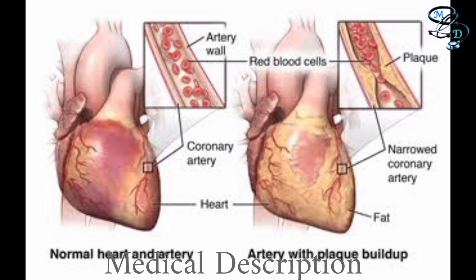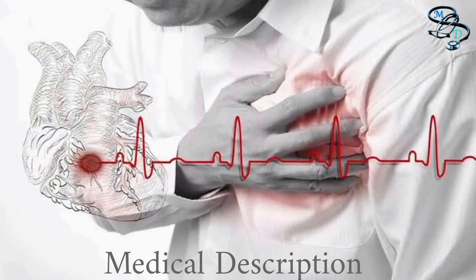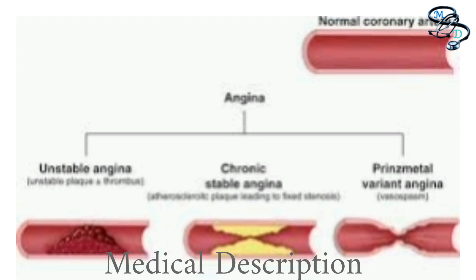If bypass graft surgery is done, medical treatment must be continued post-operatively. Angina treatments include stents, drugs, and lifestyle changes. Treatment options might include lifestyle changes, medications, or angioplasty and stenting. When blocked heart arteries are causing chest pain — keeping an area of your heart from getting enough oxygen — your doctor may recommend treating the blockage to avoid a heart attack.